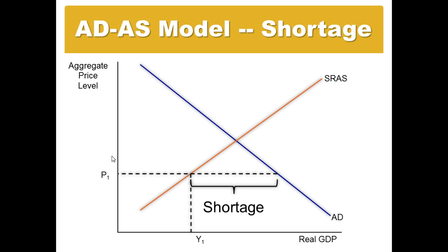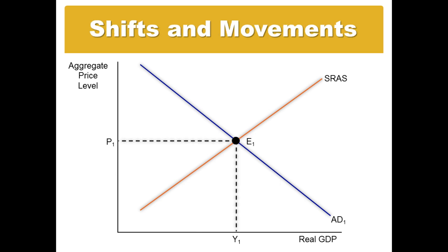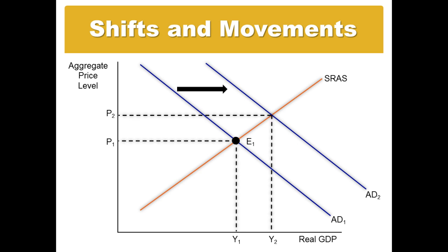The other thing we want to look at is the difference between a movement and a shift in these curves. The intersection of the two curves creates an equilibrium, and equilibrium stays where it's at unless one of these two curves changes or shifts. If the aggregate demand curve were to shift to the right, that would create a new price level and output — a shift in aggregate demand — and it moves the equilibrium point along the short-run aggregate supply curve to a new point, E2. So a shift identifies which curve is actually changing, and when a curve shifts, it creates a new equilibrium point that moves along the other curve.